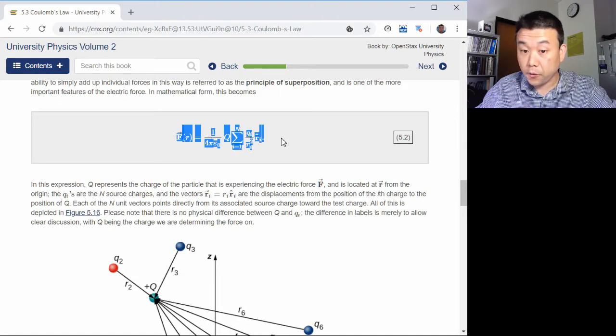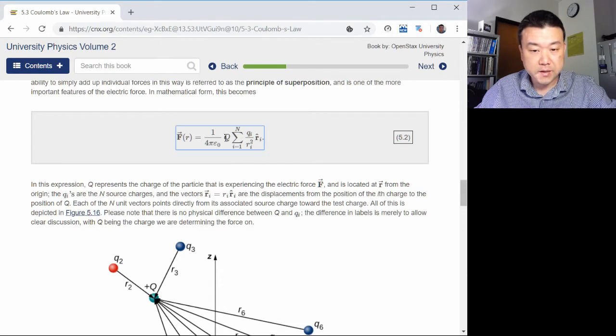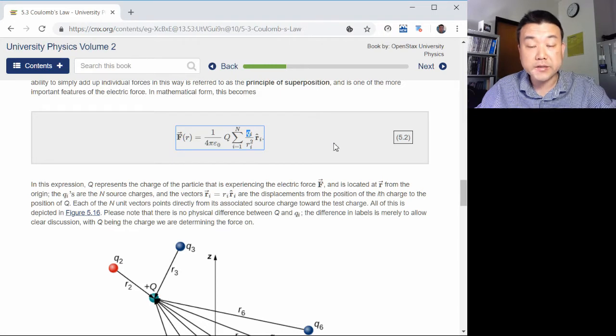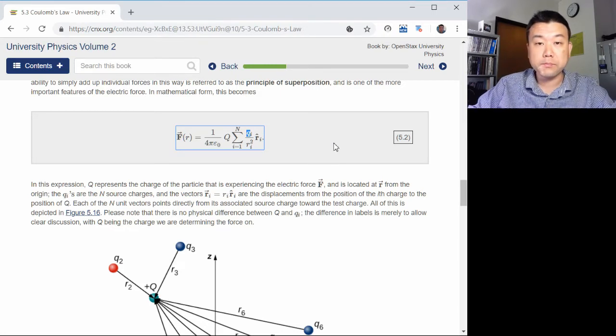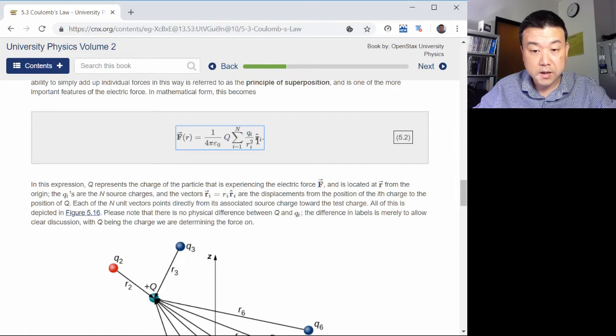charge that is feeling the electrostatic force. So, this mathematical form already includes this, that like charges repel. If you have like charges, that means this charge Q and this charge lowercase q are the same sign. They are either both positive or both negative. And in that case, the direction of force is same as the direction that connects the two charges together.